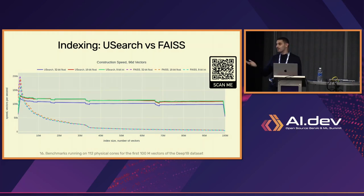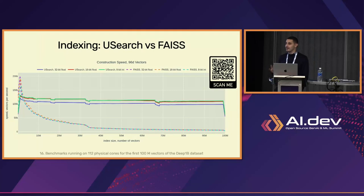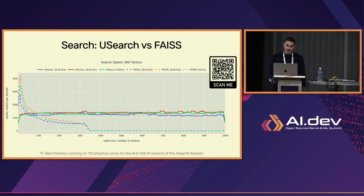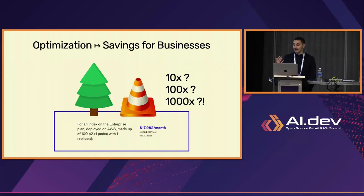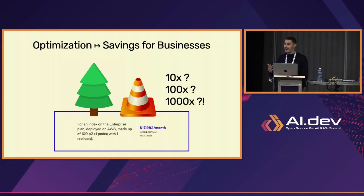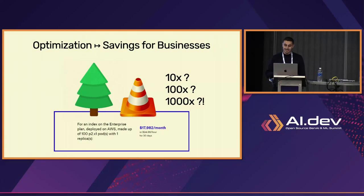For search, even at 100 million entries we sustain about 100,000 operations per second, and this is not the limit. Within a series of articles, I compared our system to some of the commercial solutions being actively promoted in the ecosystem. Our solution might be tens, hundreds, maybe a thousand times more cost-efficient — it's really hard to tell when the gap is so big.